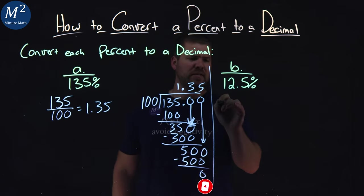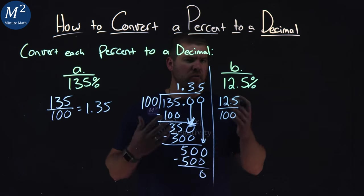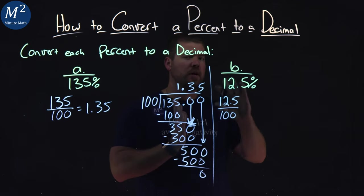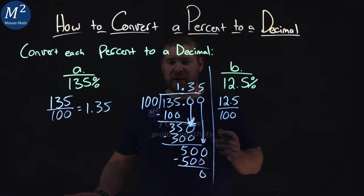We can write this as a fraction, 12.5 over 100. So let's do some long division here. Normally we would multiply the numerator and denominator by 10 for simplifying the fraction, but we're just going to be dividing here, so don't worry about that.